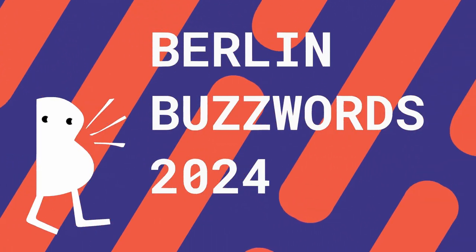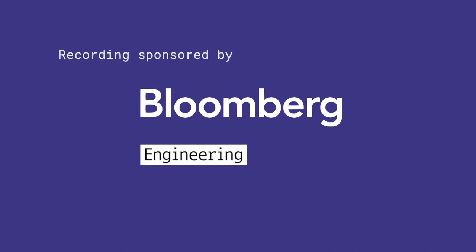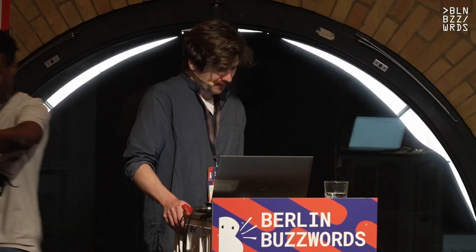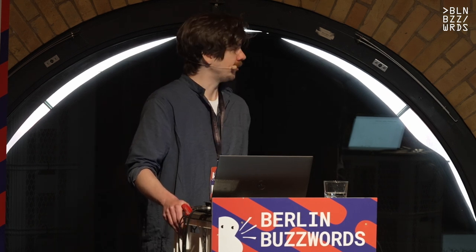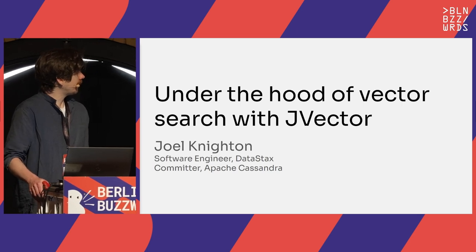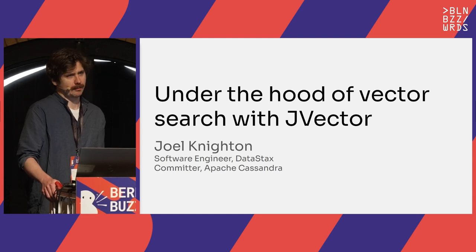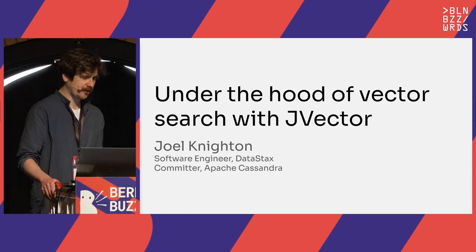This is my first time at Berlin Buzzwords. I've really enjoyed meeting everyone so far, and I'm grateful for the opportunity to give this presentation. The title is 'Under the Hood of Vector Search with JVector.' I'm Joel Knighten. I work at Datastax as a software engineer, mostly on problems in the domain of vector search. I'm also a committer on Apache Cassandra and a major contributor to JVector, a new library we're developing for ANN vector search in Java.